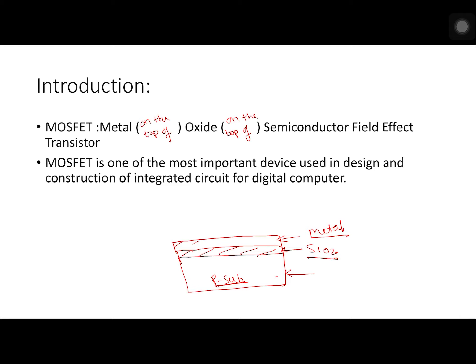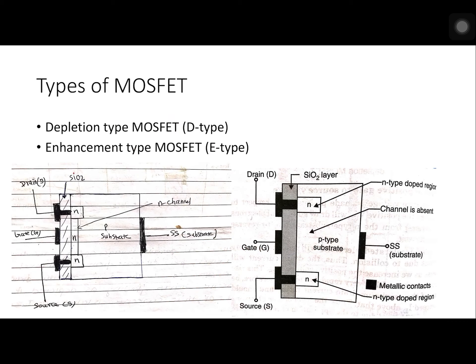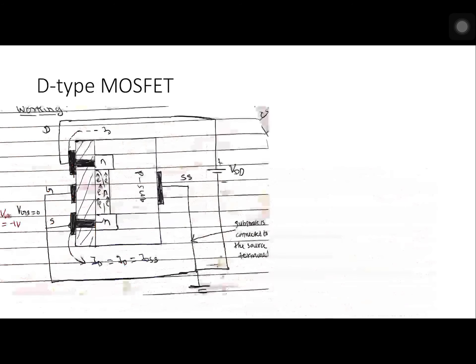MOSFET is one of the most important devices in electronics today. There are two types of MOSFET: the first is depletion type or D-type, and the second is enhancement type or E-type. The basic differentiating factor is the channel. If there is a channel between drain and source, it is D-type. If there is no channel — channel is absent — then it is E-type.